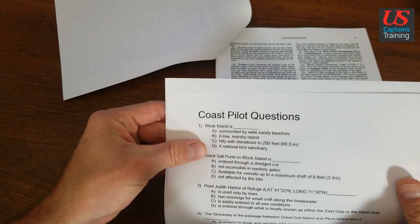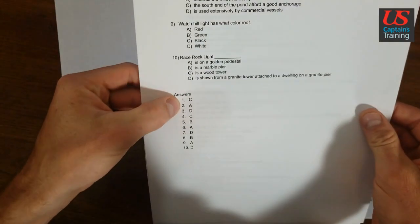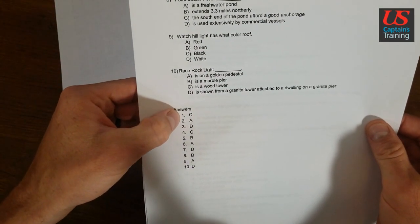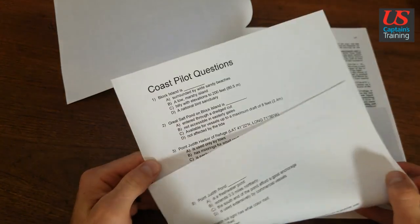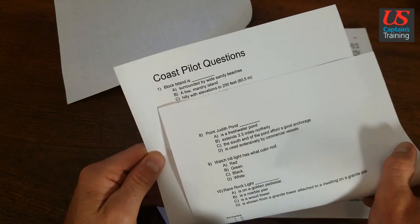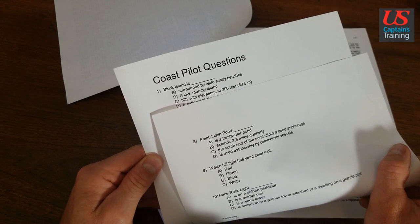I would go with that because it's directly quoted. And if we look at the answer, the answer to question 1 is C. So 1 C. Let's fold that. 1 is C, hilly with elevations up to 200 feet.